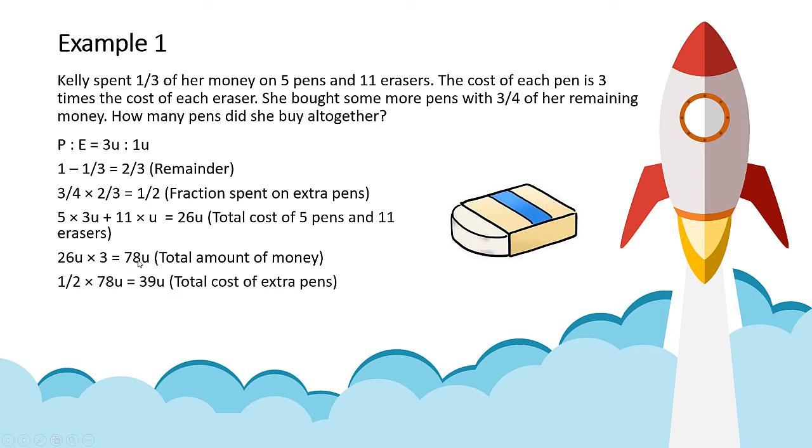And the next step, you take half times 78 units. You get 39 units. And this represents the total cost of the extra pens. Because remember, she spent half of her money on the extra pens.